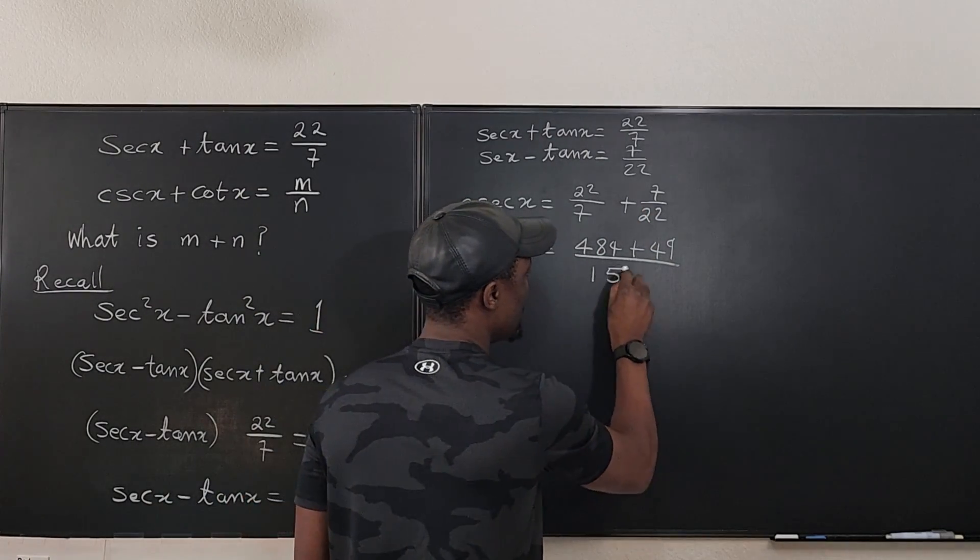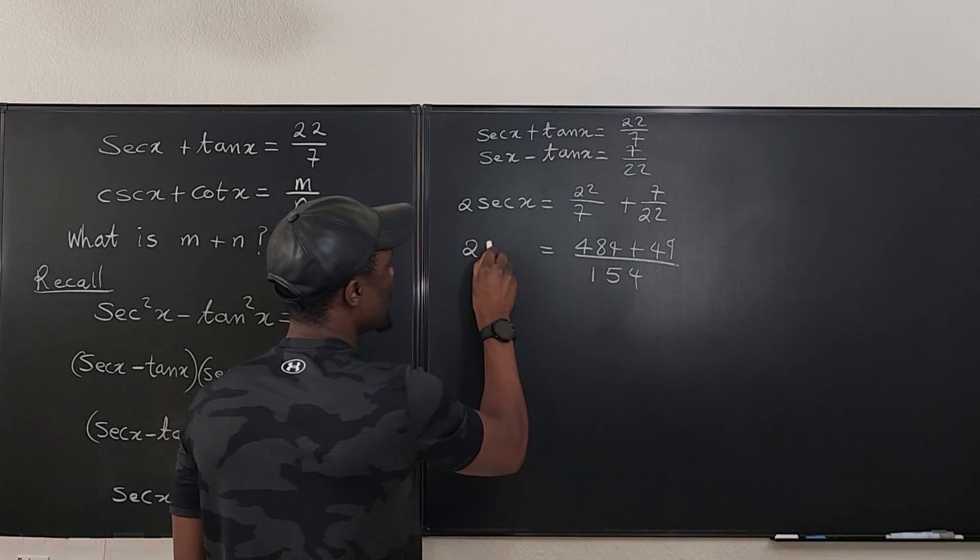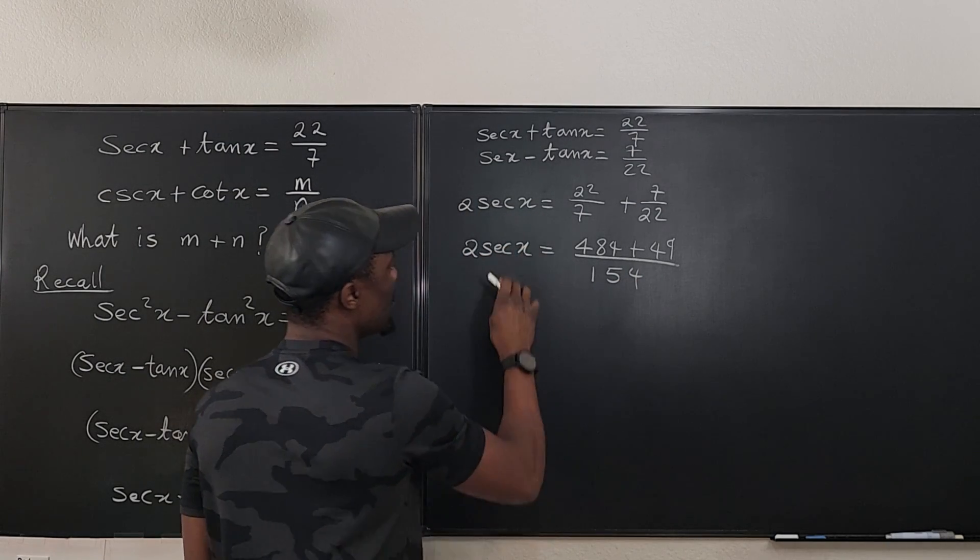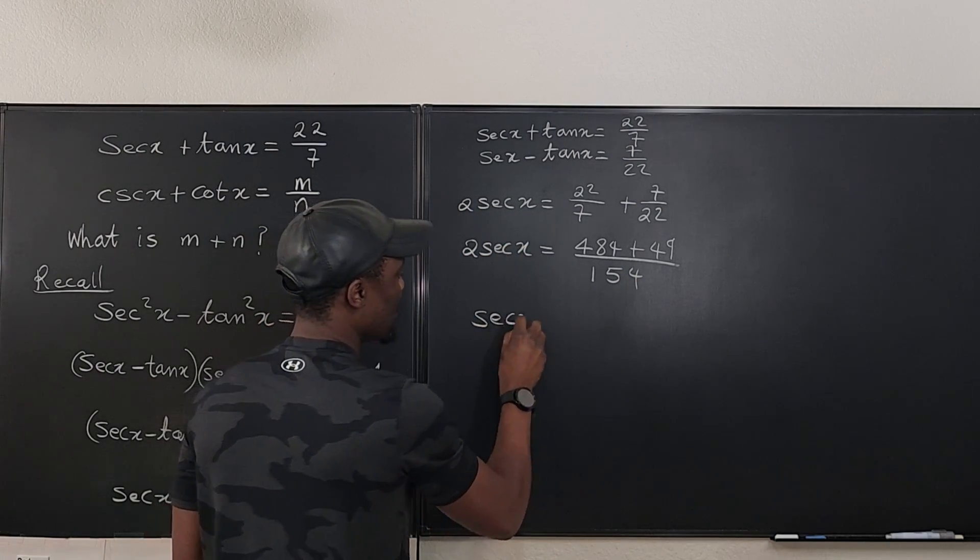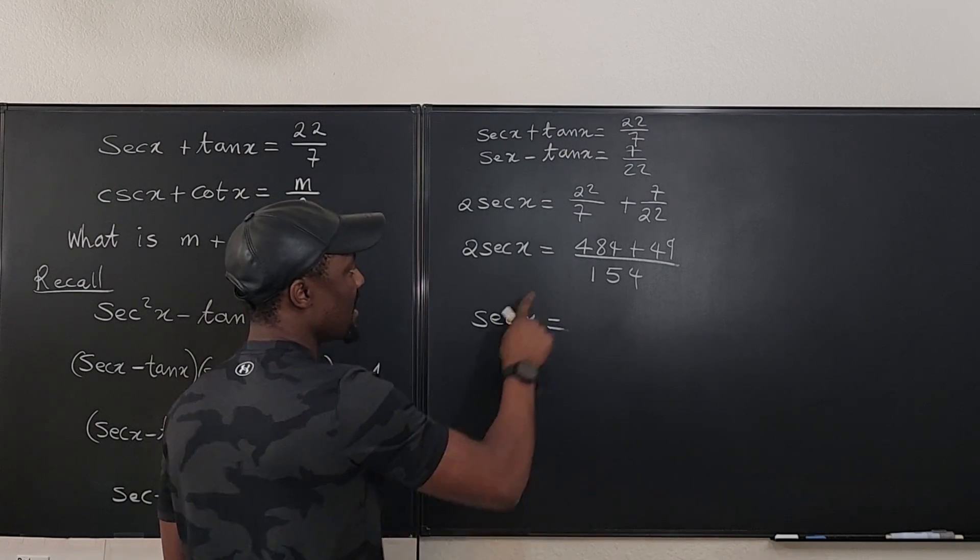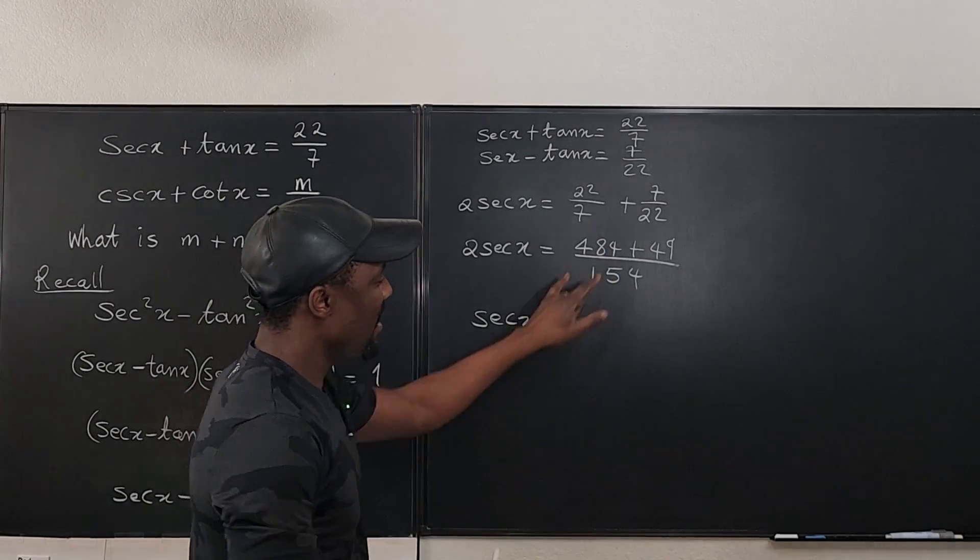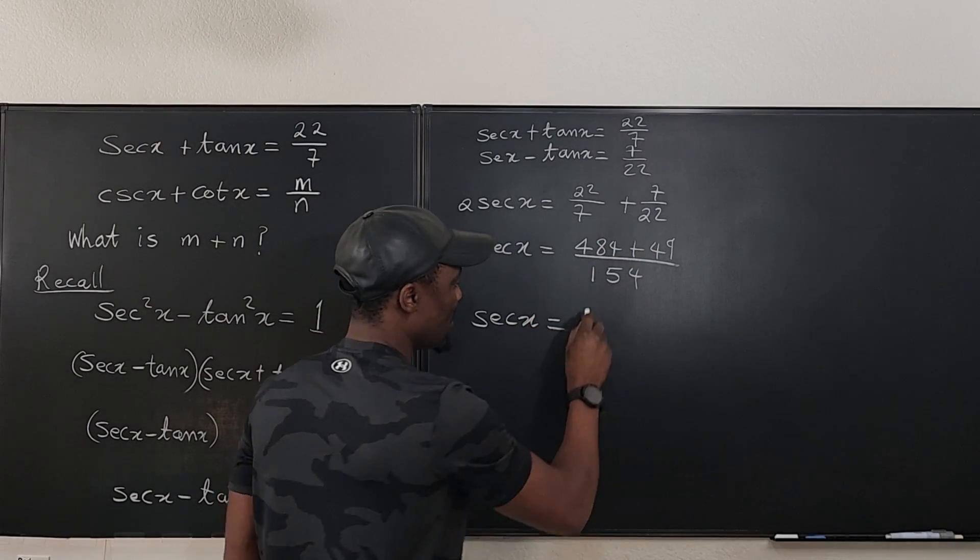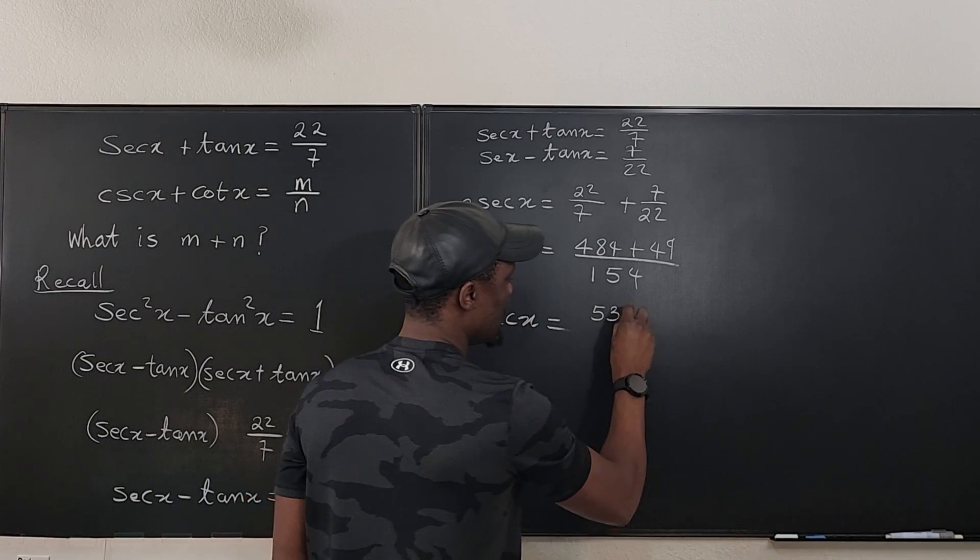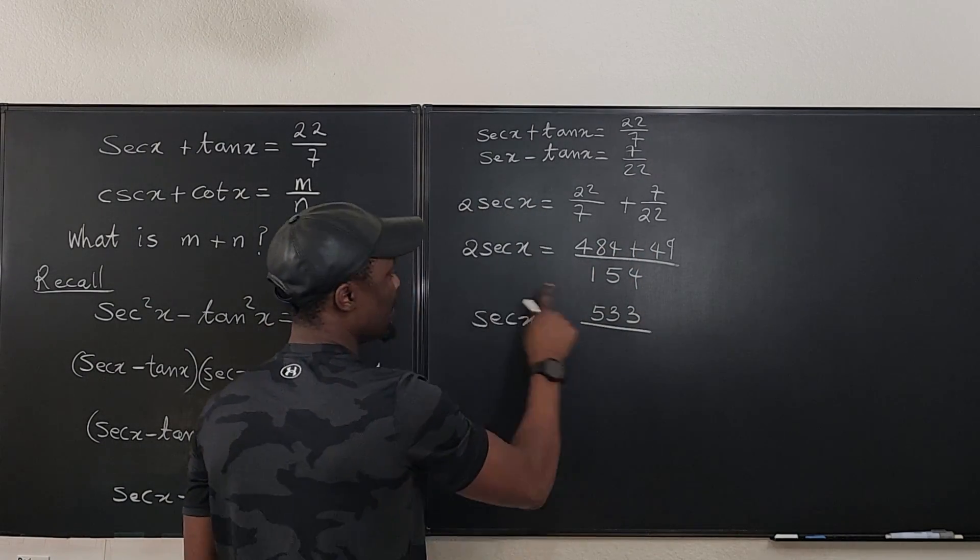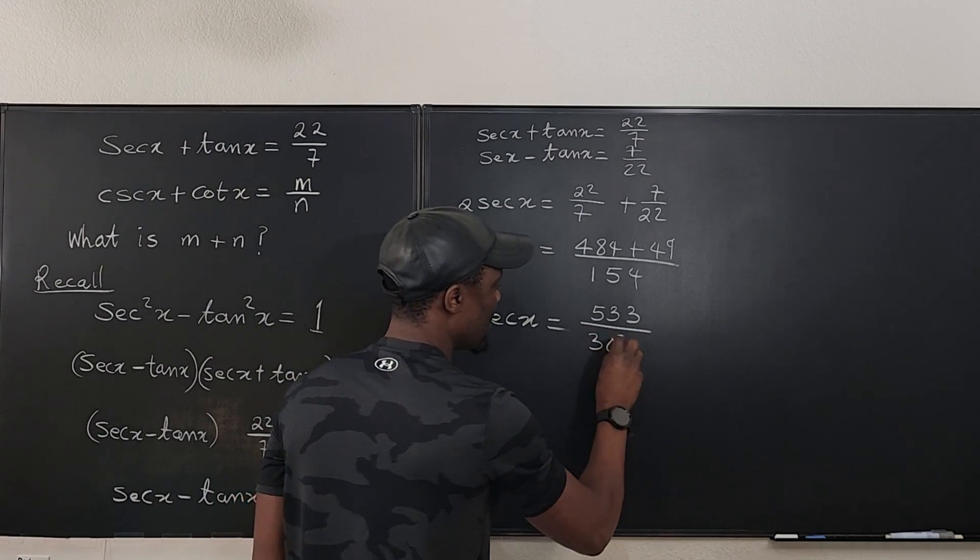So you have 154 equals 2 secant x. So what is secant x? Secant x is clearly this divided by 2. So if we add these two together, we're going to get 533. So this is 533 divided by, you divide this by 2, it's 308.